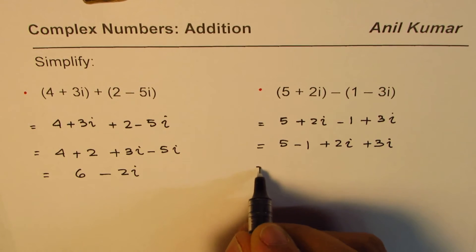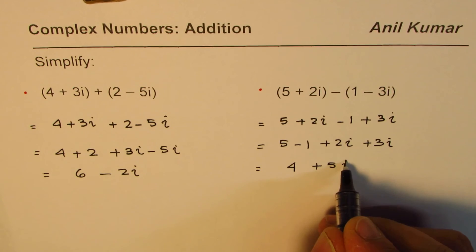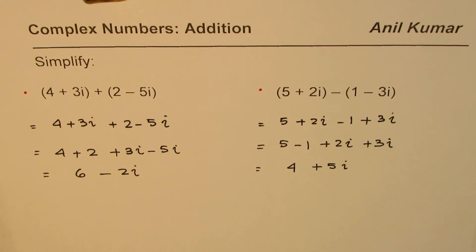5 - 1 is 4, 2i + 3i is 5i, so 4 + 5i is the answer for this one. I'm Anil Kumar, and I hope that helps. Thank you and all the best.